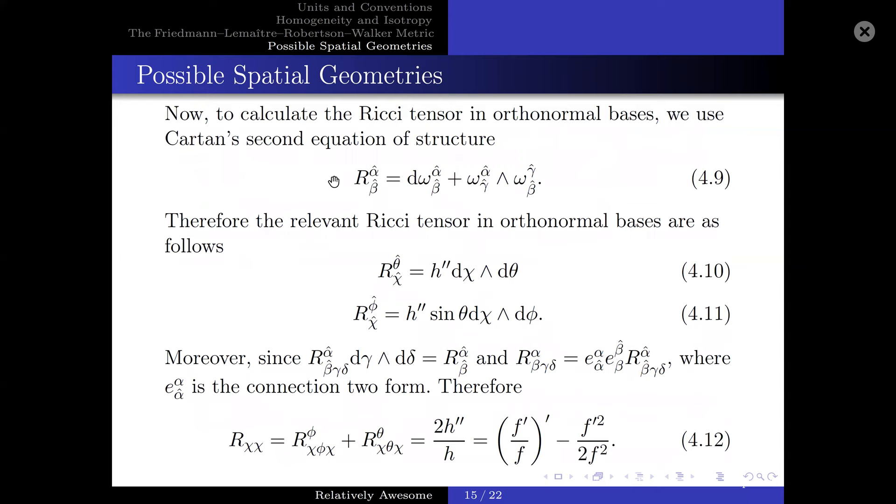From this, we can now introduce the Cartan's first equation of structure to calculate the spin connections. And the equality above is zero because there is no torsion in general relativity. And by inspection, the relevant spin connections are as follows. Now, to calculate the Ricci tensor in orthonormal bases, we use the Cartan's second equation of structure, which is the following. And therefore, the relevant Ricci tensor in orthonormal bases are as follows. Moreover, since the Riemann tensor is related to the Ricci tensor in orthonormal bases in the following manner, and the Riemann tensor is related to the Riemann tensor in component form in the following manner, where e^α_α̂ is the connection form. Therefore, the Ricci tensor, R_χχ, the Ricci tensor component, R_χχ, can be written as follows.